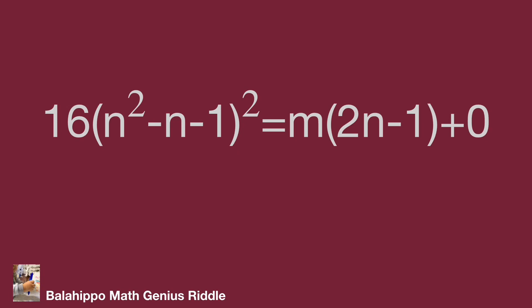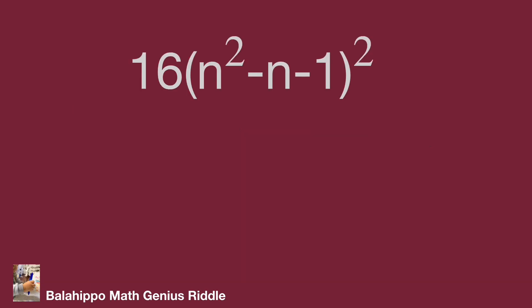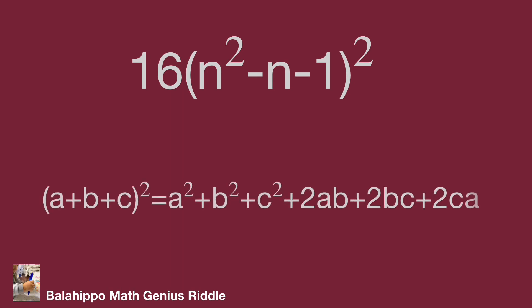Next, to develop the item on the left side, 16 times quantity n squared minus n minus 1 squared - it is a three-item square. The rule for quantity a plus b plus c squared equals a squared plus b squared plus c squared plus 2ab plus 2bc plus 2ca. Adopt the formula.